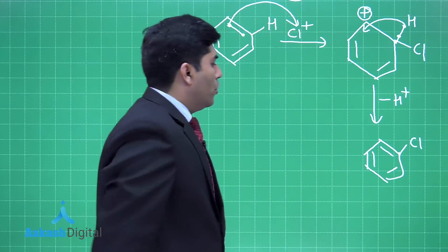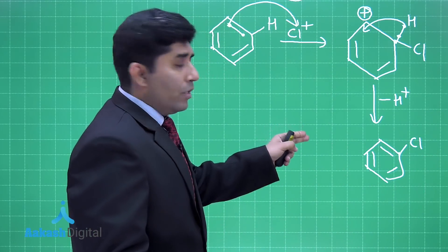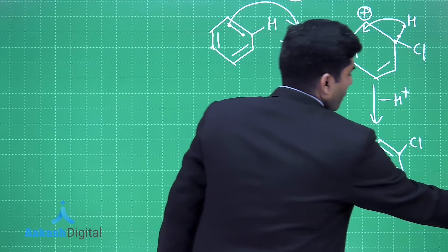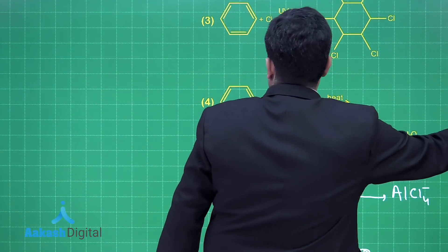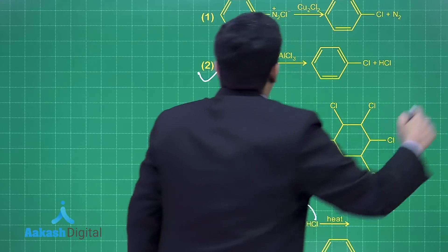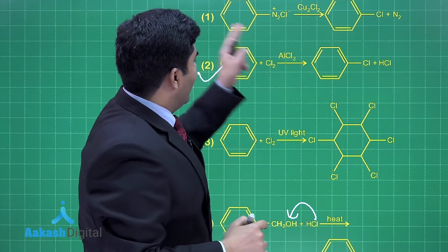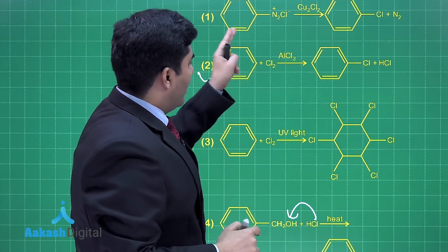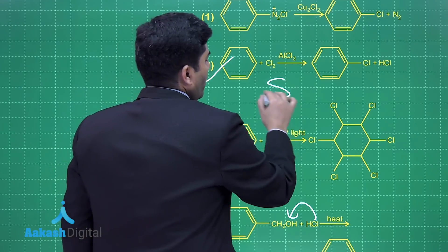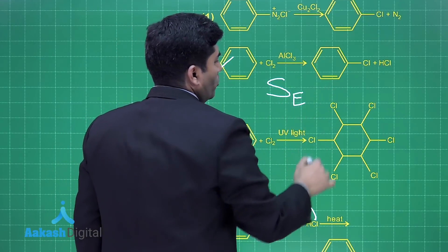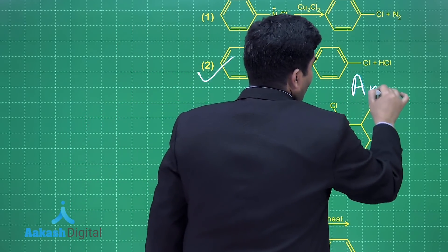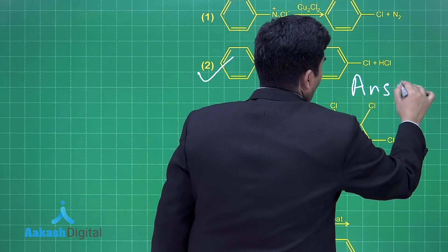And at the end we will get this product, so this is chlorobenzene. The preparation of chlorobenzene in presence of AlCl3 is an example of electrophilic substitution reaction. Our answer is option number two.